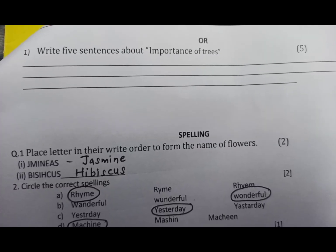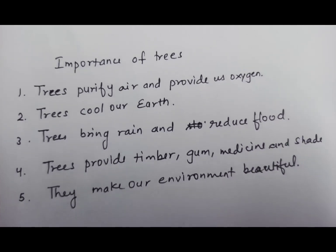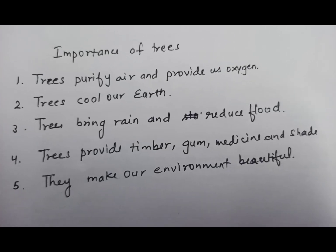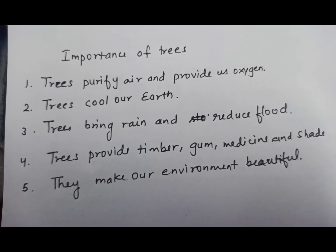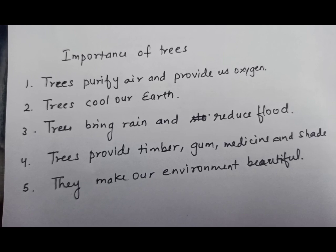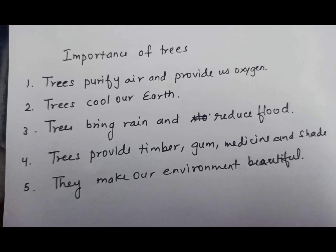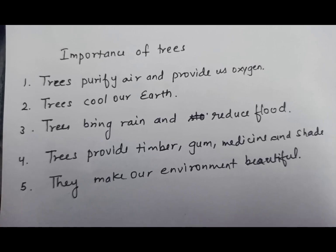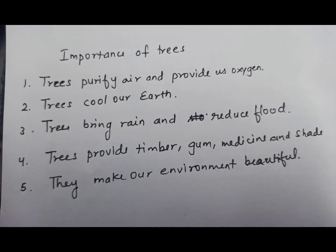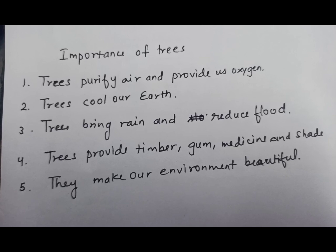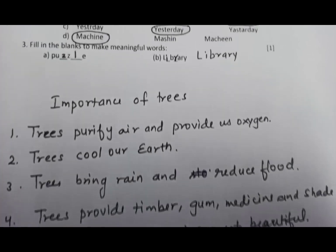Next creative writing: Write five sentences about the importance of trees. Trees purify air and provide us oxygen — hawa ko saaf karte hain, hamein oxygen dete hain. Trees cool our earth — earth ko thanda rakhte hain. Trees bring rain and reduce floods — barish ke liye trees hi zimmedaar hain. Trees provide timber, gum, medicine, and shade — yeh sab hume dete hain trees. They make our environment beautiful — hamein environment ko sundar banaate hain.